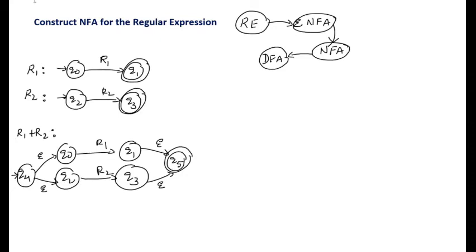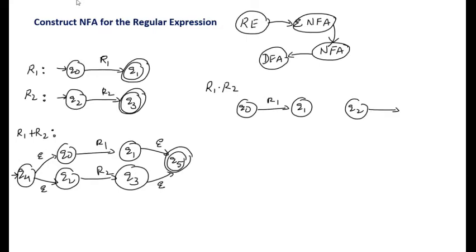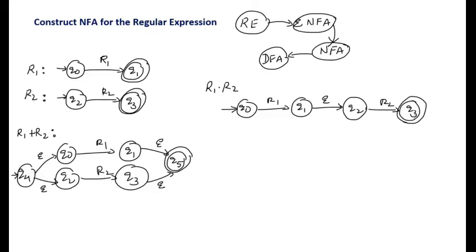We can also perform concatenation on r1 and r2, represented as r1 concatenated with r2. We write r1 and r2 one beside the other: q0 on r1 moves to q1, and q2 on r2 moves to q3. To concatenate them, q1 on epsilon moves to q2 — meaning without reading any symbol from q1 it reaches q2 — and q2 on r2 moves to q3, making q3 the final state. So r1 is concatenated with r2.